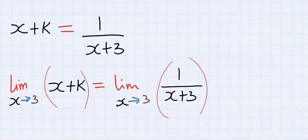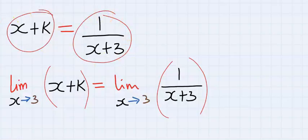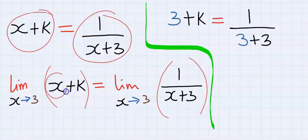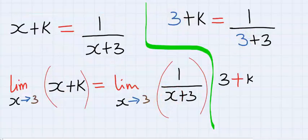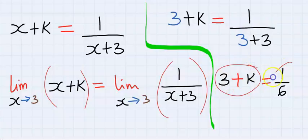Next, take the limit of both sides as x tends to 3. This simply means instead of x, I'm going to put 3 on both sides. Next, we have 3 plus k equals 1 over 6.